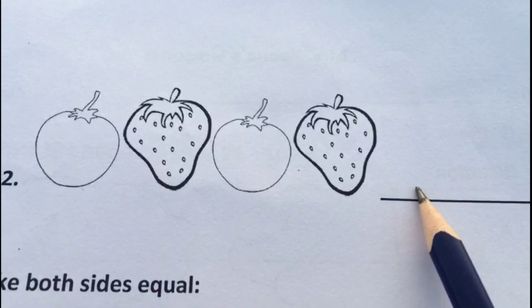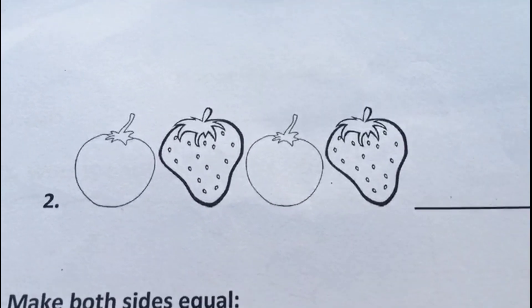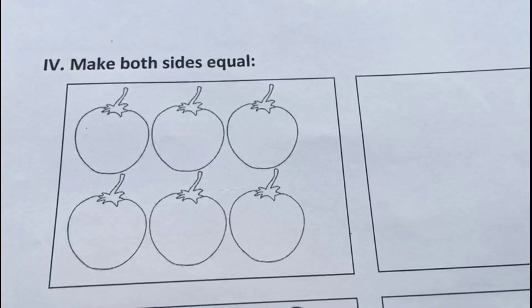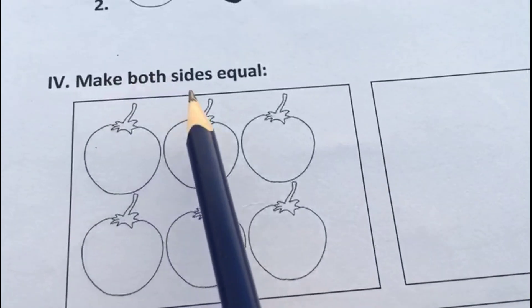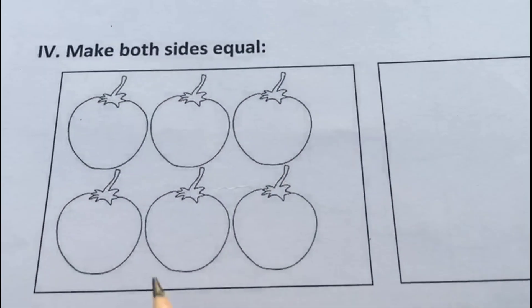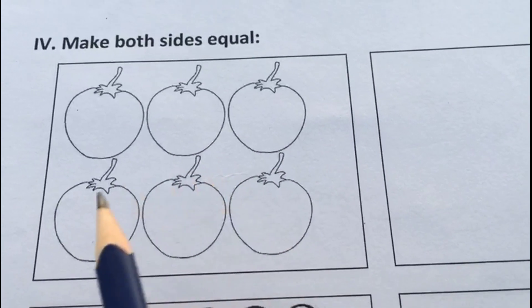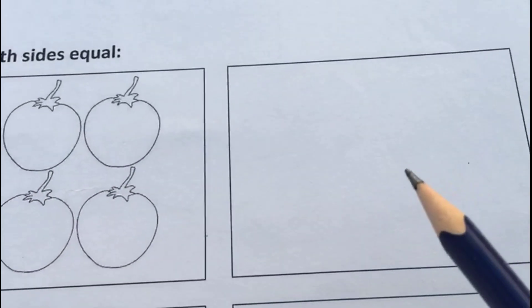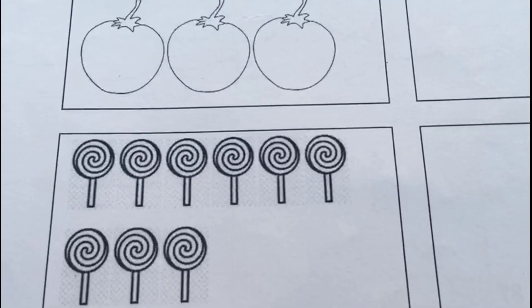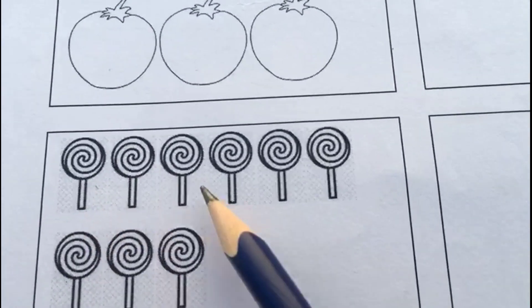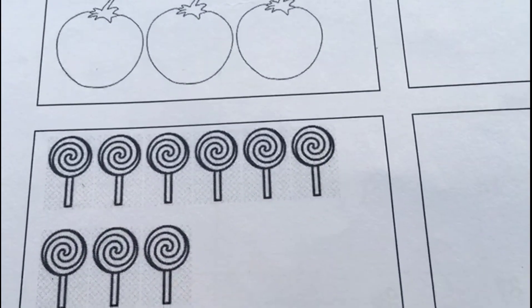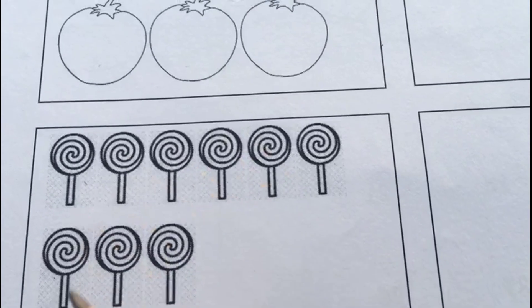This is the fourth question: make both sides equal. We have six tomatoes here. The same number of objects should be drawn on the other side. The same way, here we have nine lollipops, so you should ask your child to draw some other objects which are nine in number.